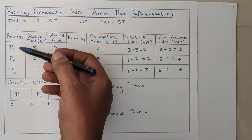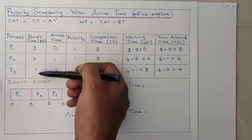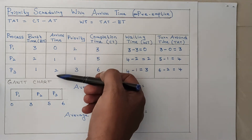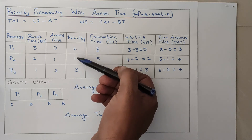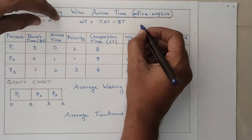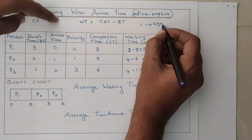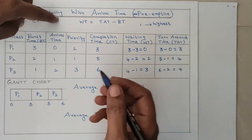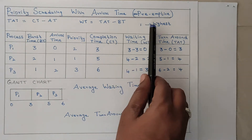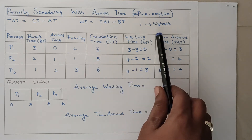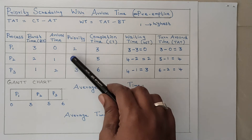In this example we have taken three processes P1, P2, and P3. The burst time and arrival time of each process are available. We are also introducing a priority column with values 2, 1, and 3. Here, 1 is considered the highest priority, 2 is the next highest, and 3 is the next. In some examples, 3 is the highest priority, but in this example we are assuming 1 is the highest priority.